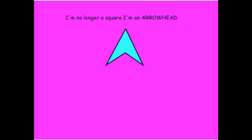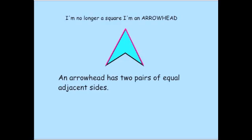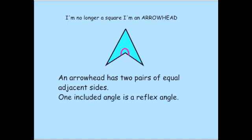I'm an arrowhead. Like a kite, an arrowhead also has two pairs of equal adjacent sides. One included angle is a reflex angle, which means it's greater than 180 degrees.